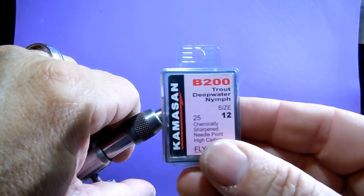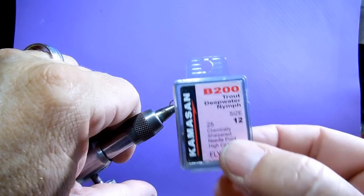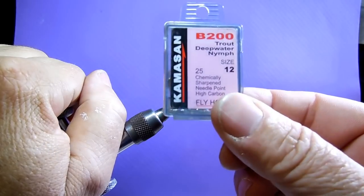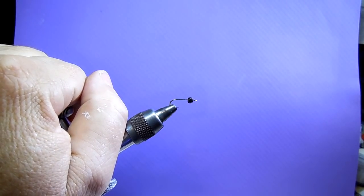It's on a B200, sorry, excuse me, I'll start again. A B200 deep one nymph size 12, made by Camosome.